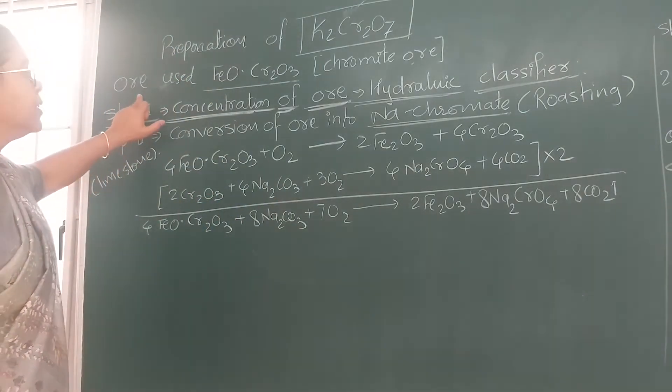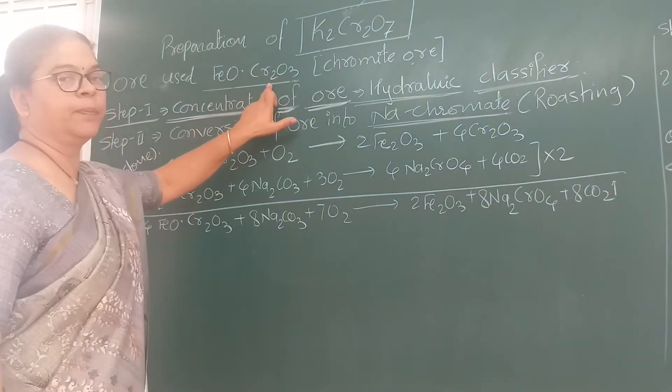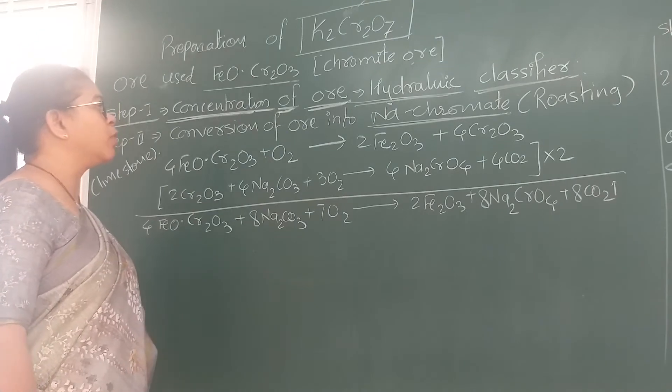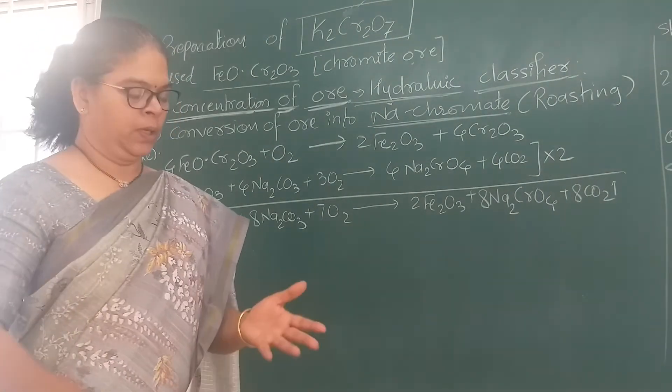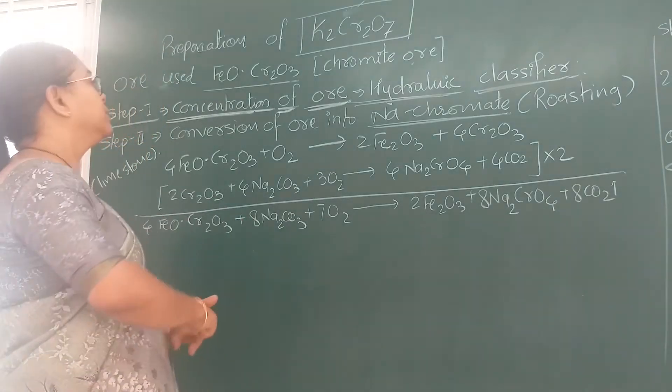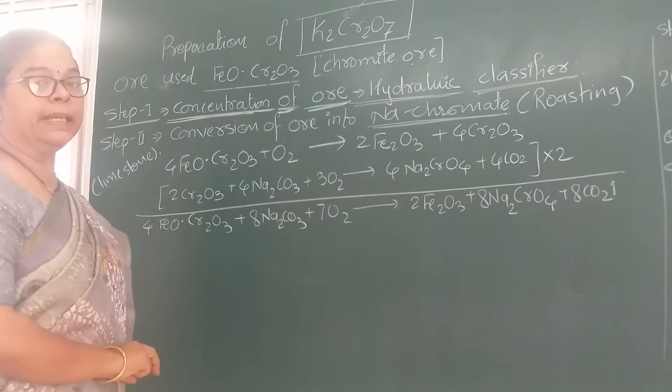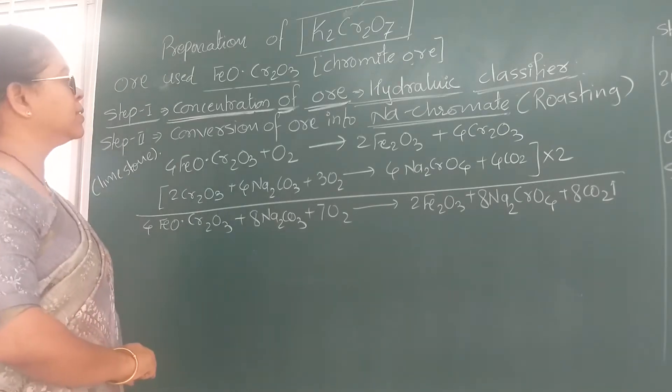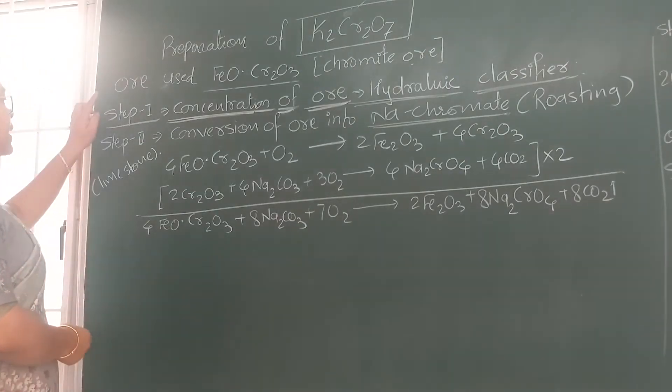For preparation of it, the ore which is used is chromite ore. The formula of ore is FEO·Cr₂O₃. The formula of chromite ore may be asked in your CET level test, therefore you must keep it in mind.